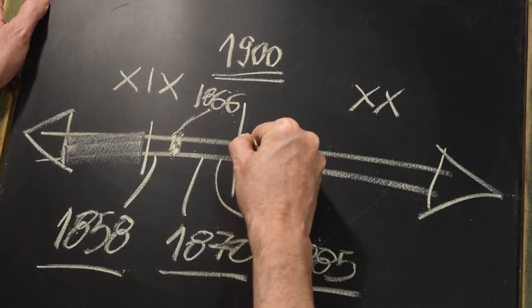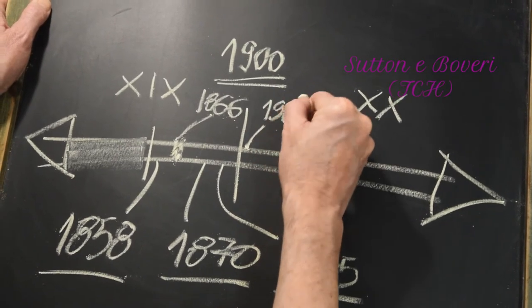Aí, entre 1902 e 1903, Sutton e Boveri observam independentemente que o comportamento desses fatores mendelianos durante a formação dos gametas era perfeitamente paralelo ao comportamento dos cromossomos na meiose, e criam, assim, a teoria cromossômica da herança, a TCH. O Sutton interpretou dados de meiose em uma espécie de gafanhoto, enquanto que o Boveri estudou dados de meiose em ouriço do mar. É importante dizer que nesse período não havia consenso sobre a TCH — a hipótese foi, inclusive, criticada por muita gente, e foi sendo aceita gradualmente. Entre as principais dificuldades para aceitá-la era a falta de estudos relacionando fenótipos específicos à herança de determinados cromossomos.